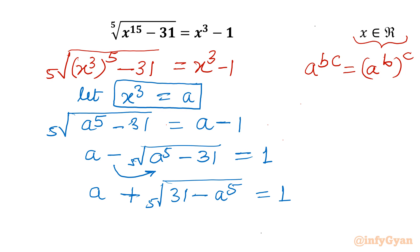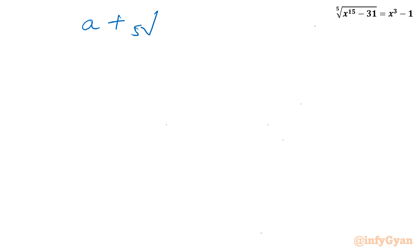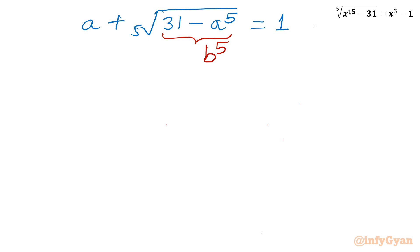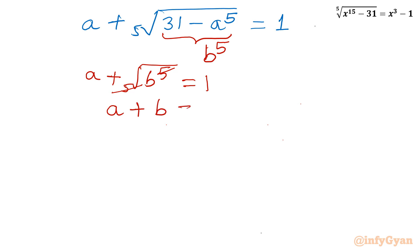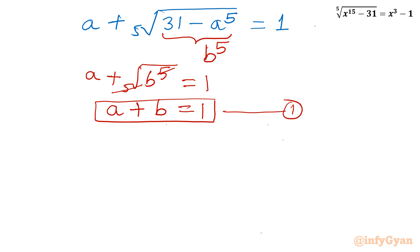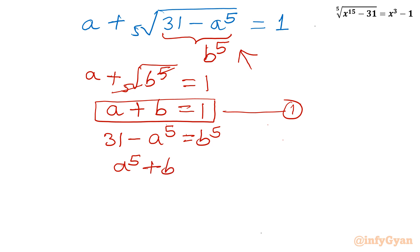Now we solve: a plus the 5th root of (31 minus a to the power 5) equals 1. I will use a second substitution, letting the radicand equal b to the power 5. The equation becomes a plus the 5th root of (b to the power 5) equals 1, so the 5th root and power 5 cancel, giving a plus b equals 1 — equation 1. From the substitution: 31 minus a to the power 5 equals b to the power 5, so a to the power 5 plus b to the power 5 equals 31 — equation 2.